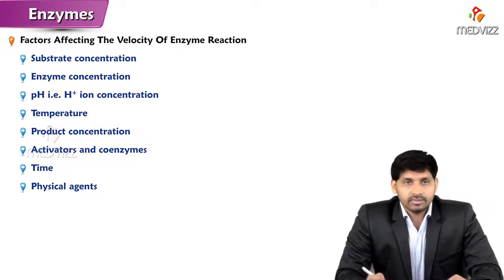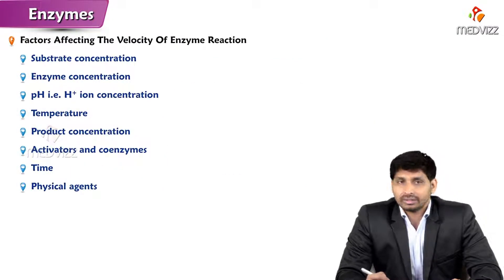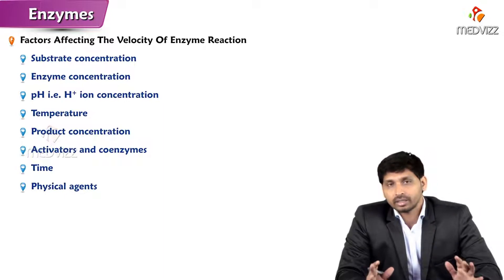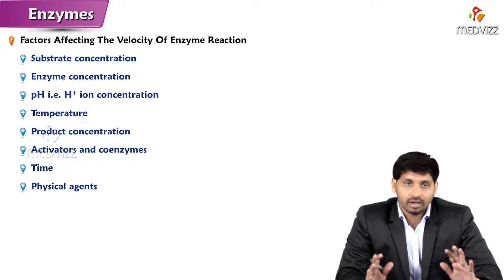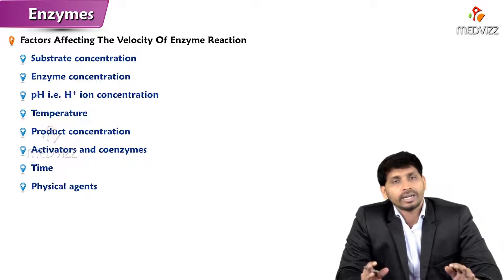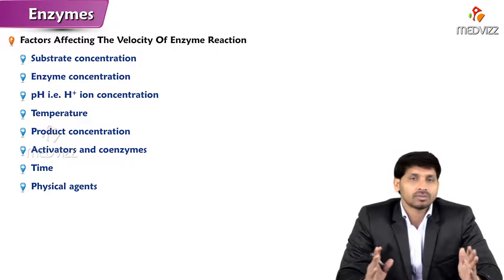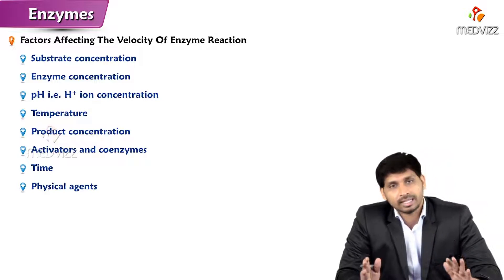Hello everyone. In this video we will be talking about the factors affecting the velocity of enzyme reaction, that means what are the factors which affect the rate of reaction of an enzyme. We are all aware of what enzymes do — they act on the substrate by lowering the activation energy, so the time taken for conversion of substrate to product is drastically reduced by the enzyme.